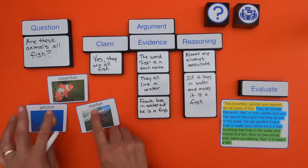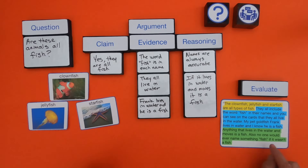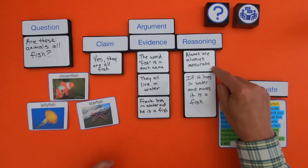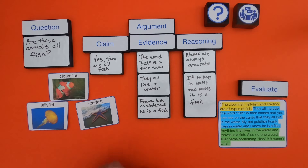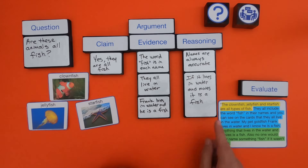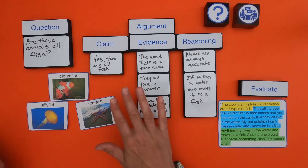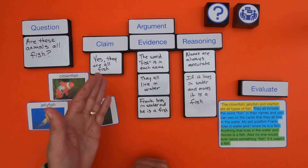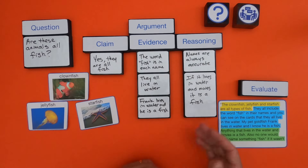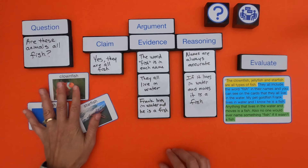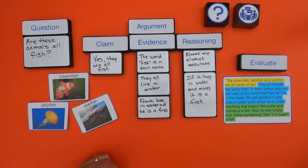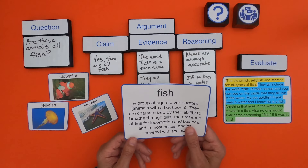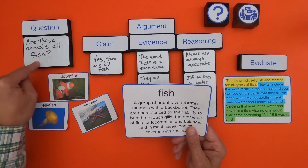The first strand of reasoning: when they use the evidence of 'fish is found in each name,' they say no one would ever name something fish if it wasn't a fish — so their reasoning is that names are always accurate. Then for the evidence about living in water, their reasoning is: if it lives in water and moves, then it is a fish. As we evaluate this, it's really important to pull out the different parts. You can say: do I agree with the claim, is there a problem with the evidence, or is it the reasoning? A lot of arguments can be solved by defining the terms in the question.